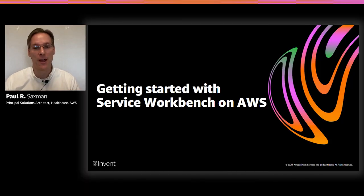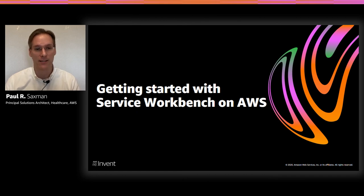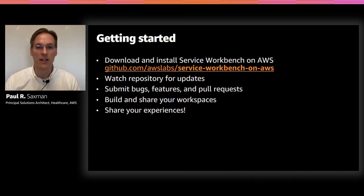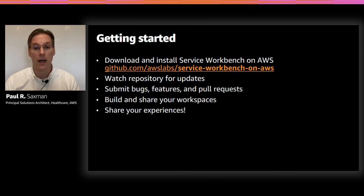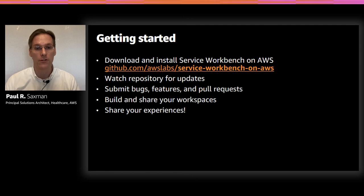Thanks, Paul. Before we wrap up, I'd like to share a few things you can do to get started with Service Workbench on AWS. As Paul mentioned, Service Workbench is fully open source and free to download and install in your own AWS environment. You can find the code, scripts, and documentation needed to deploy Service Workbench on GitHub. Since it's a rapidly evolving platform, we highly recommend that you watch the repository so you're notified of new releases and developments, including new research workspaces and platform features. As an open source project, we're looking forward to receiving your feedback, feature requests, bug reports, and pull requests — especially if you've built research workspaces deployable through AWS Service Catalog.